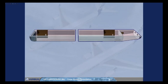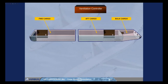The long range has three individual cargo compartments: forward, aft, and bulk. The ventilation and heating system to these compartments is controlled by a computer called the ventilation controller, which has two channels. Channel one is active and channel two is a backup. Let's start with the bulk cargo compartment.